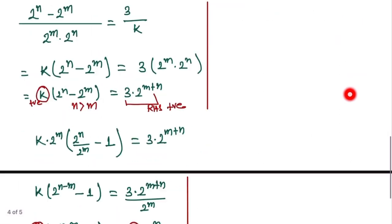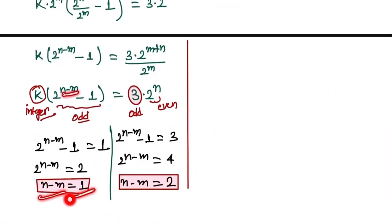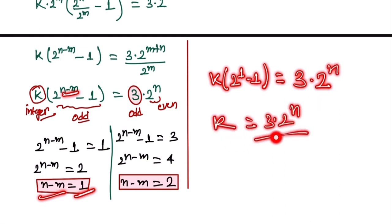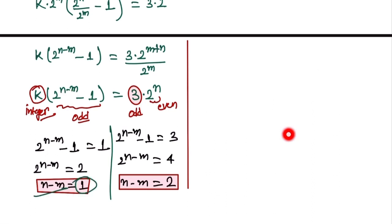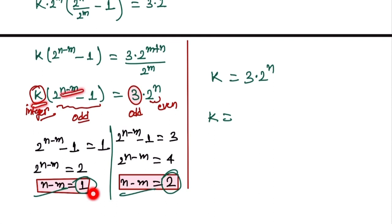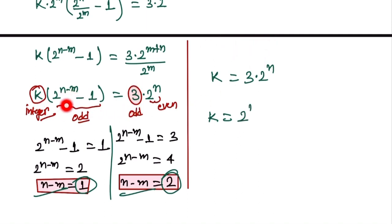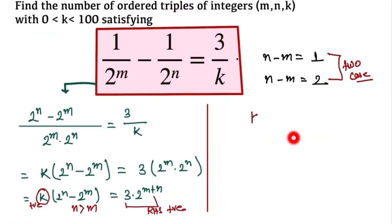We now evaluate each case. In Case 1, when n minus m equals 1: substituting gives k equals 3 times 2^n. In Case 2, when n minus m equals 2: the factor (2^2 minus 1) equals 3, so 3 cancels on both sides, giving k equals 2^n.